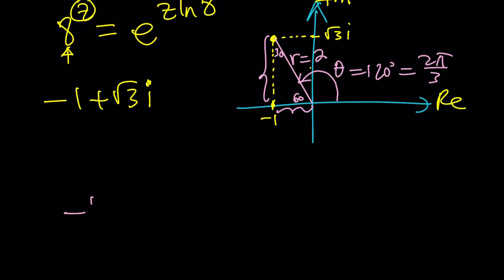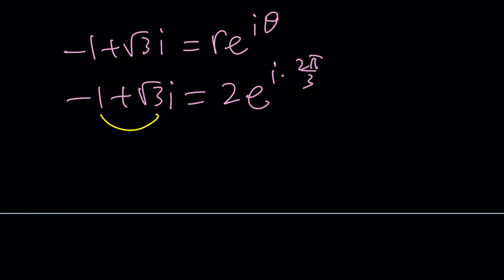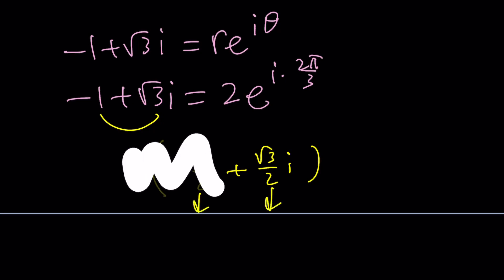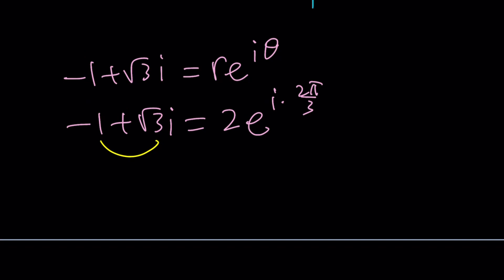So negative one plus root three i is going to be written as r e to the i theta. So it's going to become two times e to the power i times two pi over three. Obviously, you could arrive at the same solution if you consider that the absolute value is two. If I take it out, I'm going to get that. And inside, I'm supposed to have cosine theta and sine theta. It depends on you totally, like you get to decide what you want to do.